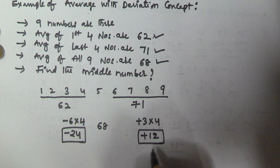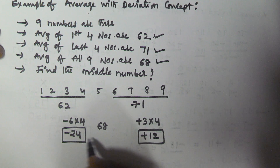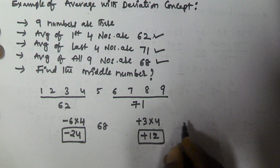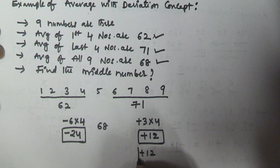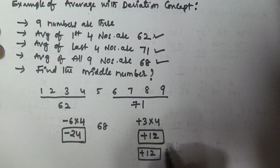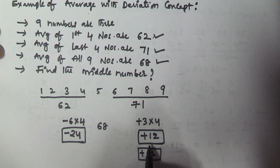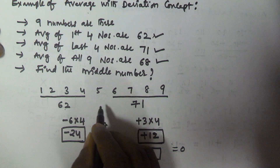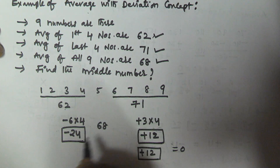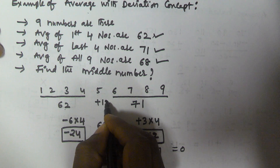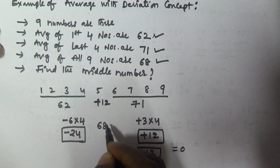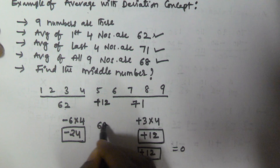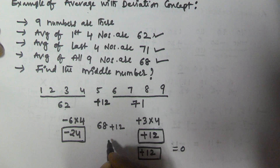On the right side we have plus 12 deviation. To make the sum of all deviations equal to zero, we need another plus 12 deviation. This means the middle number must provide a deviation of plus 12. So we add 12 to the average: 68 plus 12 equals 80. The middle number is 80.